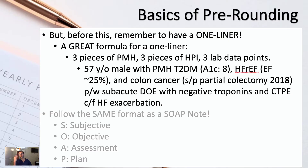Here's how you can come up with a one-liner — think about it in the rules of threes. You want three aspects and three examples of each of those aspects. For example, you want three pieces of the patient's past medical history, three pieces of their HPI, and three lab data points to help you formulate that patient.